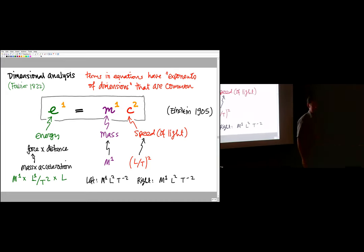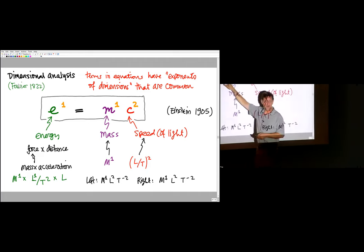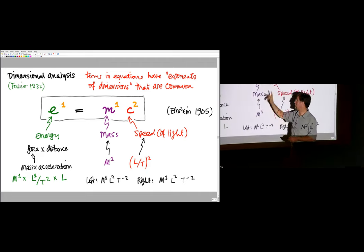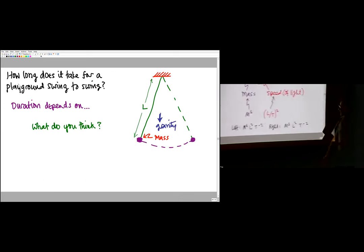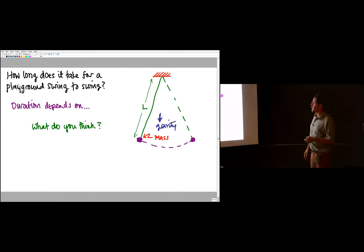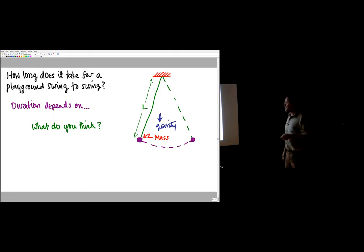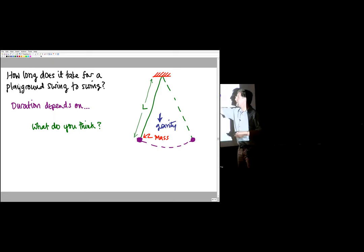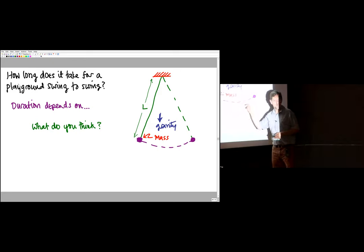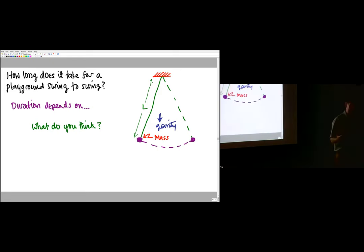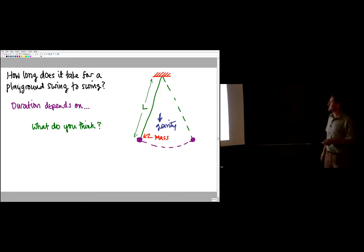Now we could have had a pi here or something else, but that could have been massaged away by choosing different units. We're going to use that incredibly powerful tool to figure out how long it takes for a pendulum to swing back and forth. So we're going to make an estimate using dimensional analysis, and let's see how it goes.